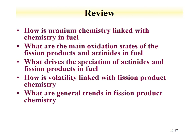Within this lecture, we reviewed how uranium chemistry is linked with chemistry in the fuel, particularly UO2+x, how oxidation states of fission products and actinides influence behavior. The general trend is that lower oxidation state means less solubility in the fuel. We covered what drives speciation of actinides in fuel, whether they form separate phases, the volatility of certain fission products, how they migrate to certain areas, and general trends in fission product chemistry — how fission products fall into groups based on their behavior within the fuel, and how some can cross between groups.